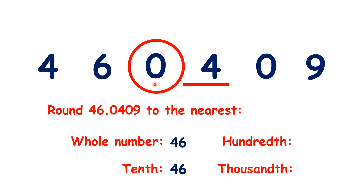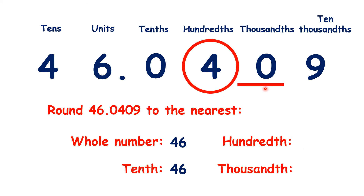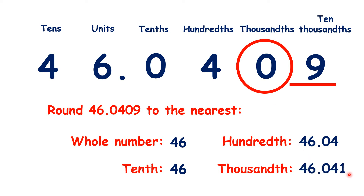Just as for whole numbers, rounding to the nearest thousand could give us a multiple of 10,000 as our answer. Now to the nearest hundredth, if we look across we have a zero, so we need to round down to 46.04. And to the nearest thousandth, if we look across we have a nine, so we need to round up, so we have 46.041.